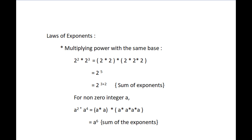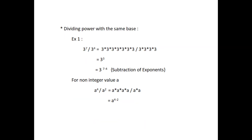The base is the same and the sum of exponents, that is 2 and 4, is 6. Next is dividing powers with the same base. Let us simplify 3 to the power 7 divided by 3 to the power 4, which is equal to 3 to the power 3, which is equal to 3 to the power 7 minus 4. Here, the base is the same and 3 to the power 7 divided by 3 to the power 4 becomes 3 to the power 7 minus 4.